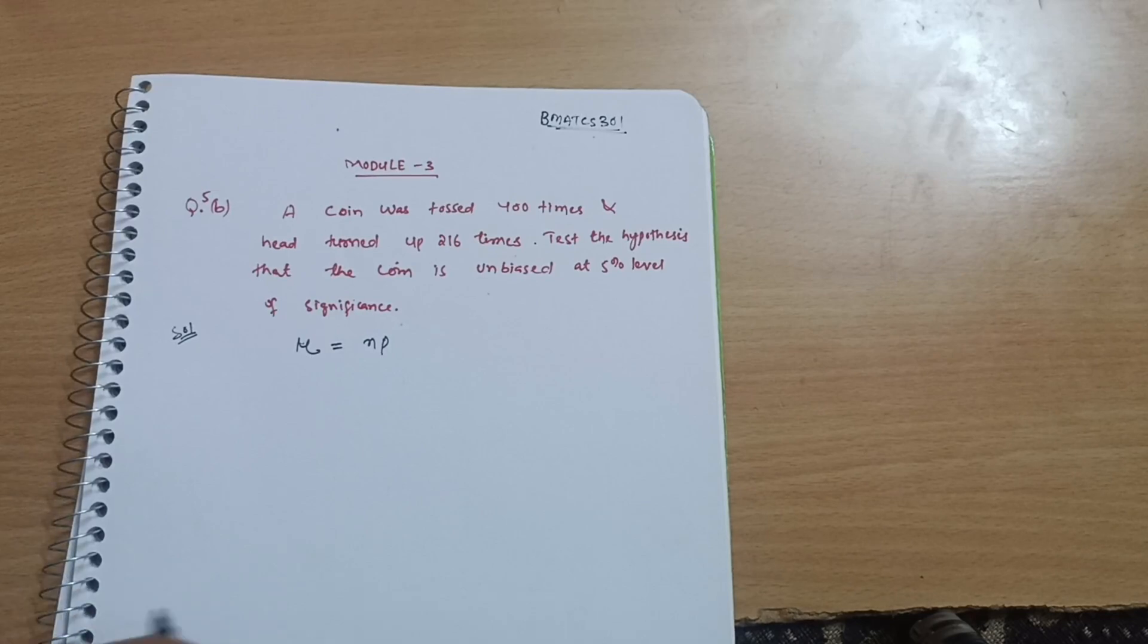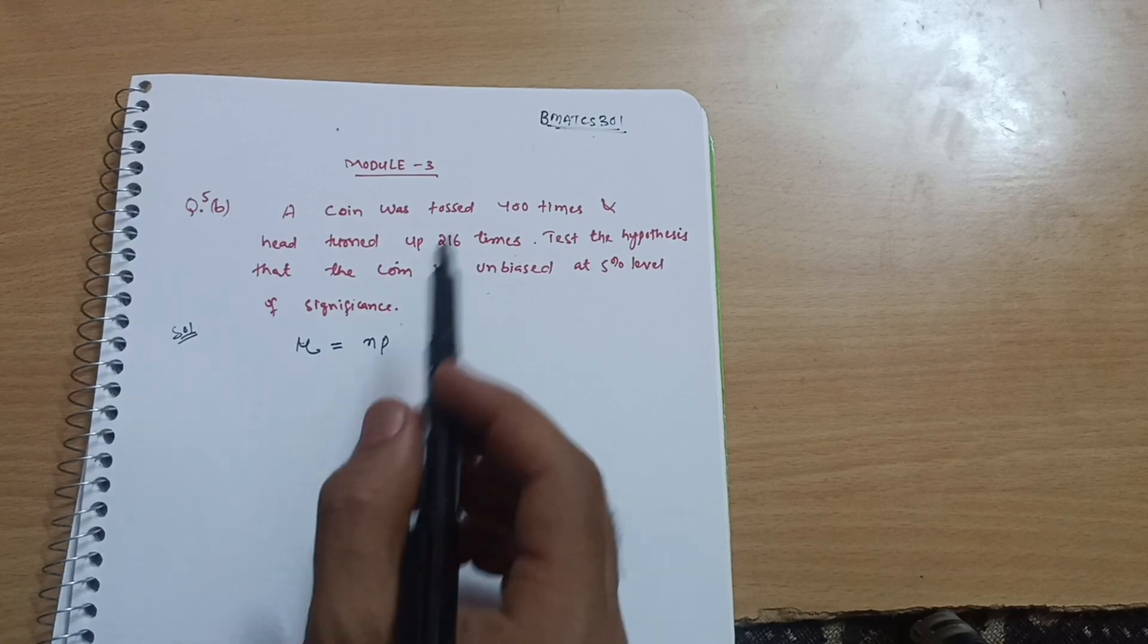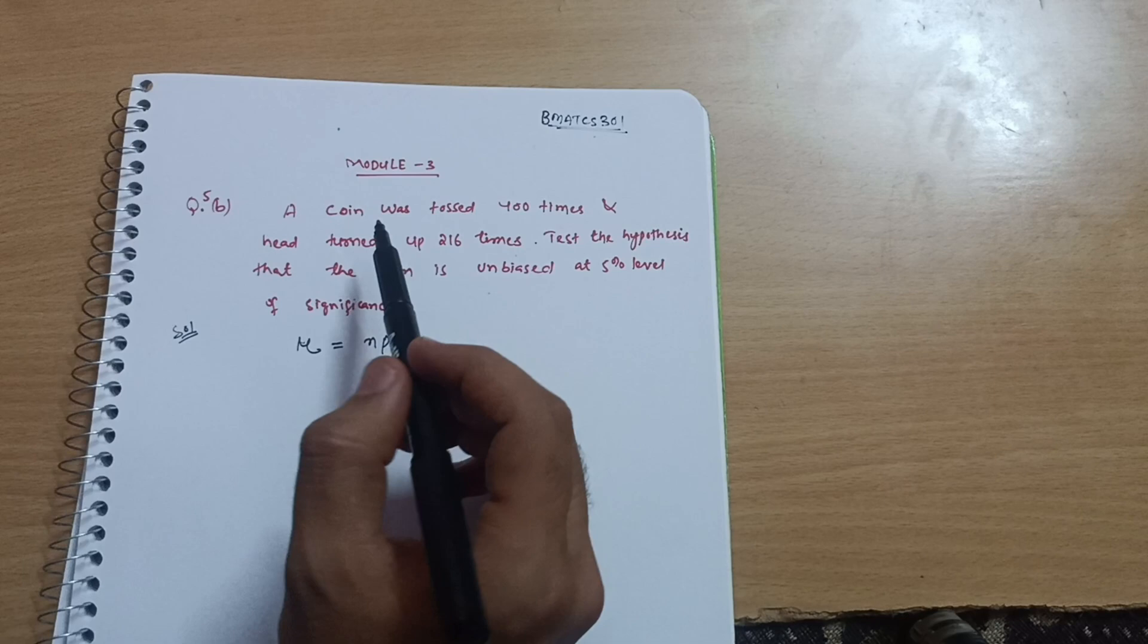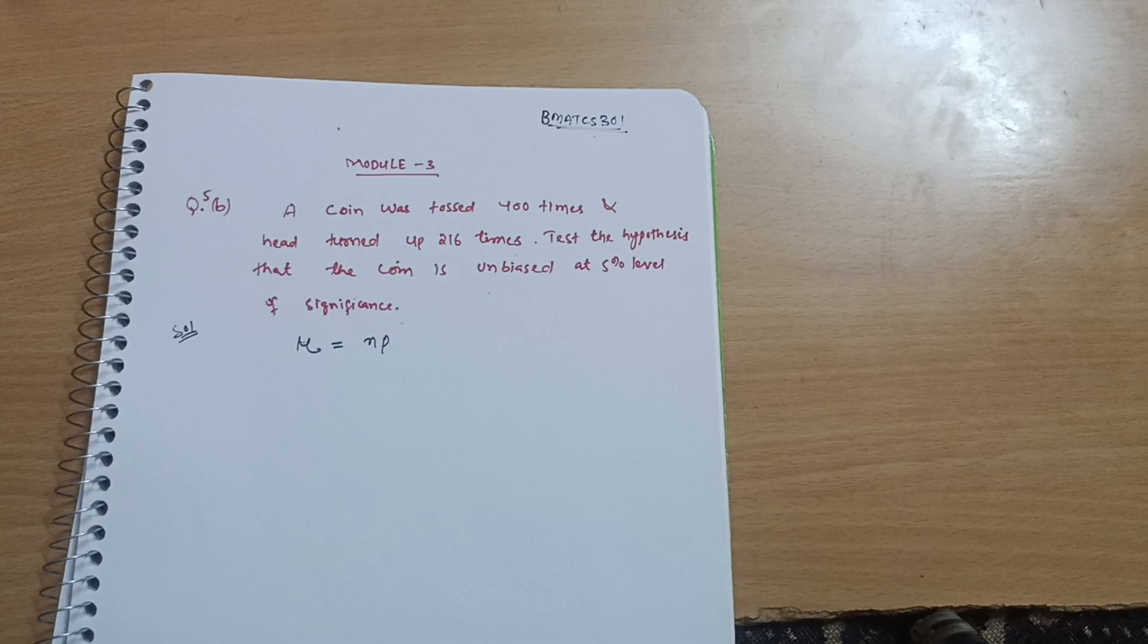Welcome back my dear friends. Again we are discussing the model question papers for the mathematics subject for CS stream students. Its subject code is BMAT CS 301. We have discussed the varieties of problems so far. I have provided the link in the description box you can go through and watch them separately.